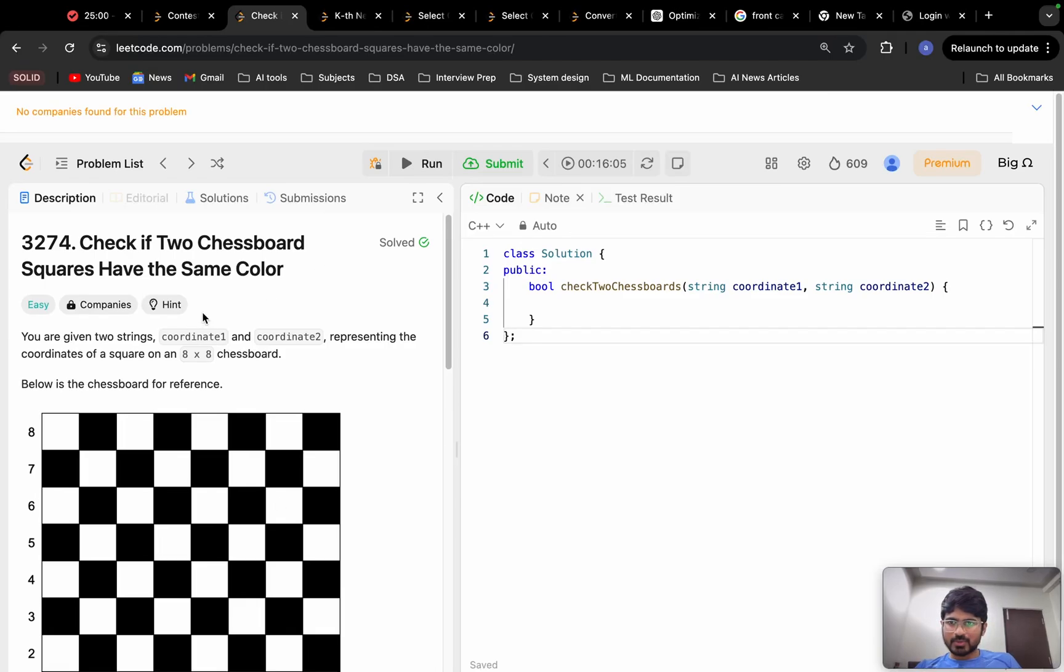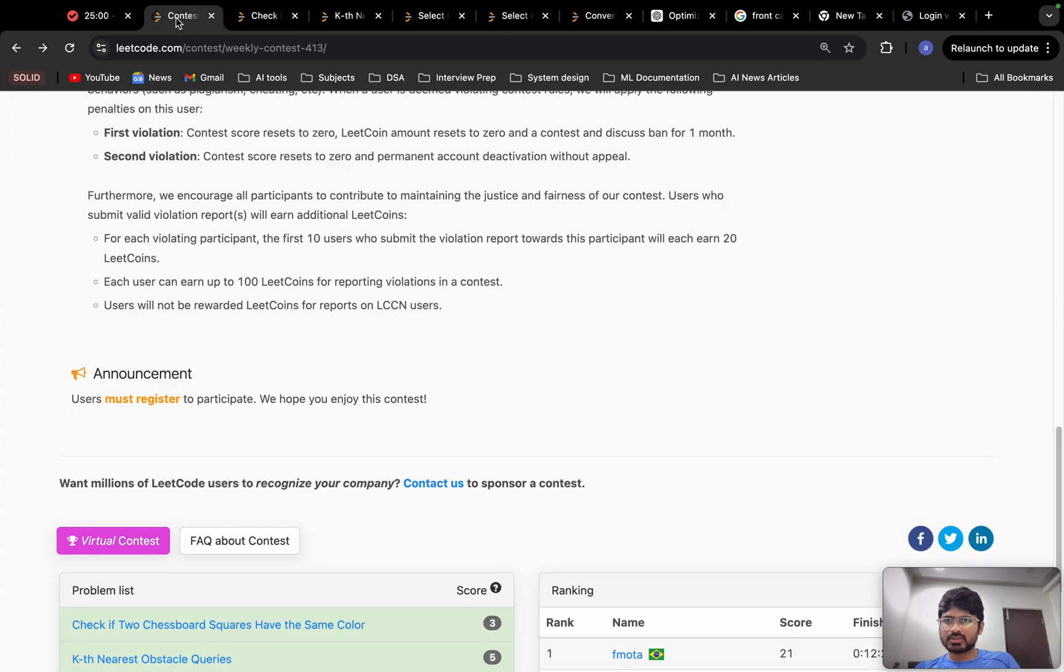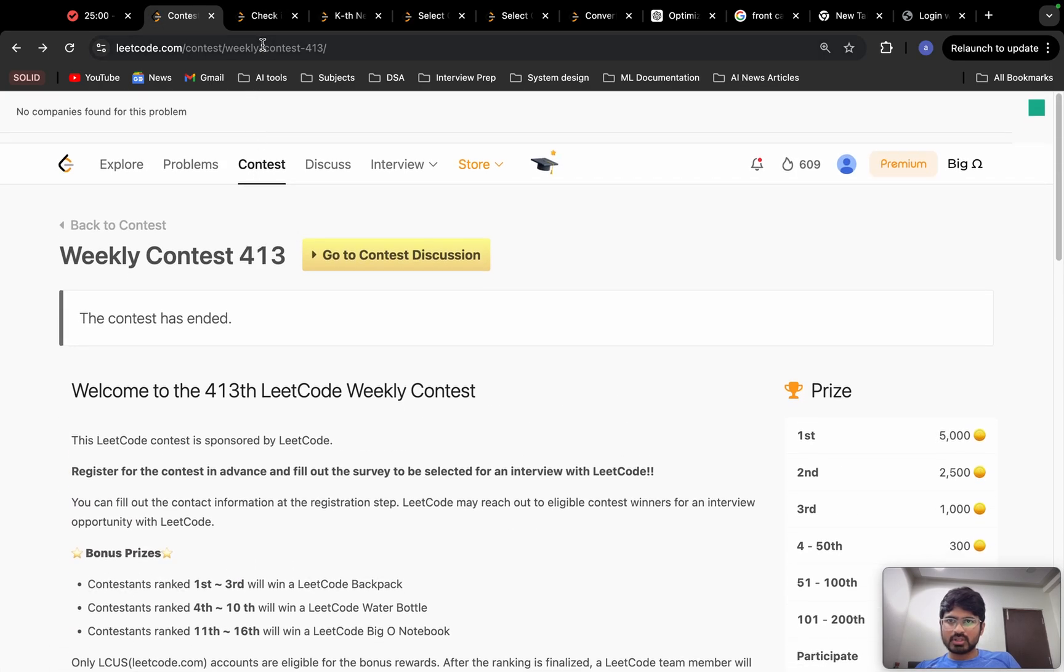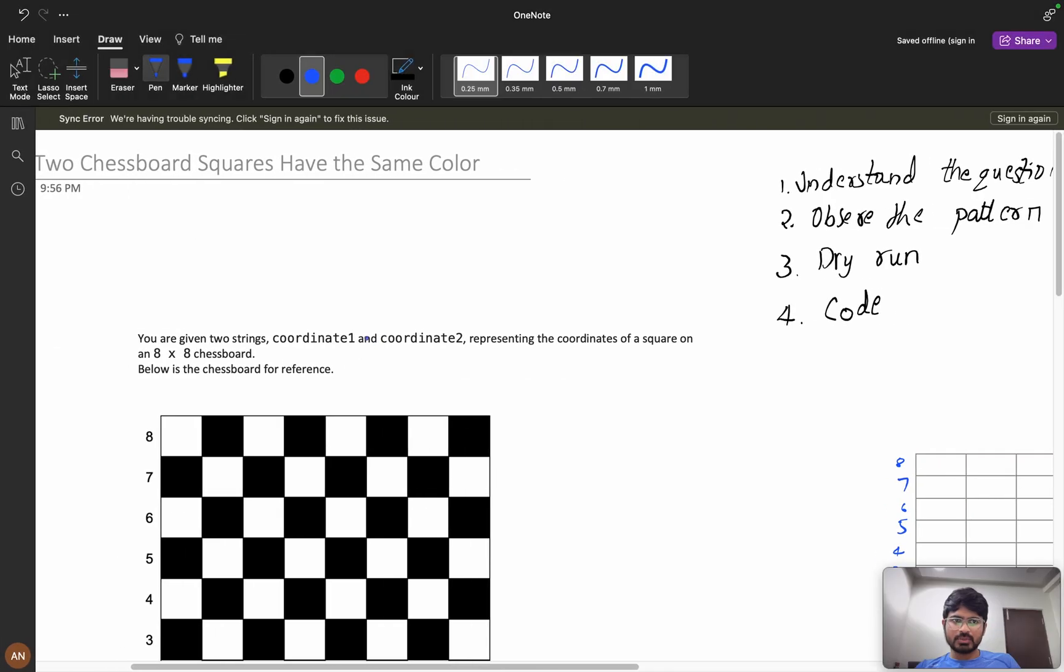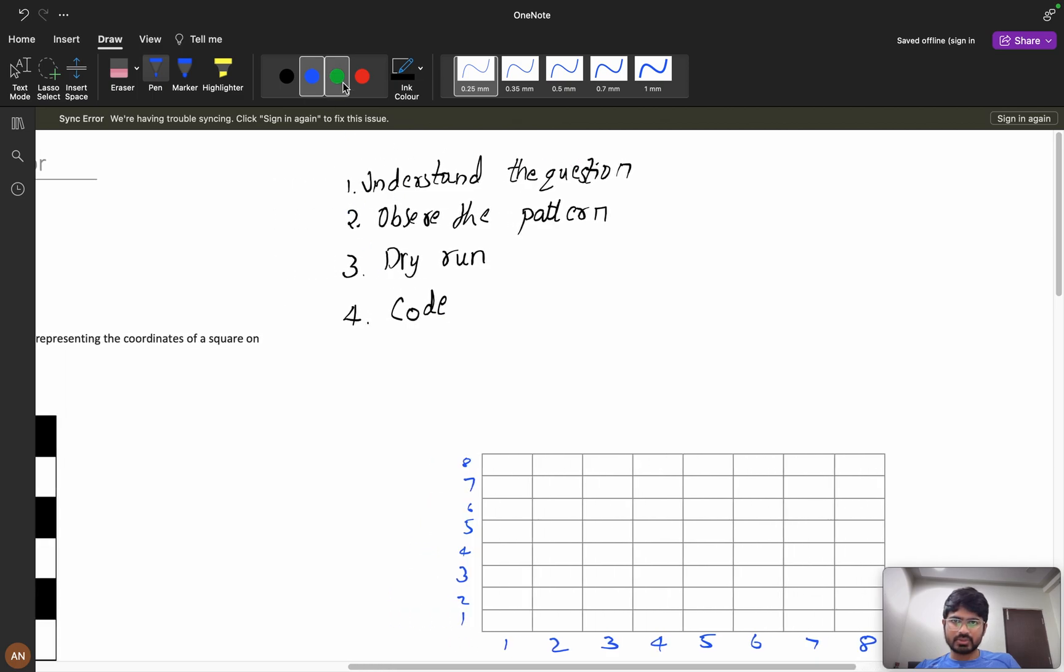Hello everyone, let's solve the problem: check if two chessboard squares have the same color. It was given in LeetCode contest 413. In this problem, we will first understand the question clearly, then observe the pattern, dry run a few scenarios, and finally see the coding part. For better understanding, please watch the video till the end.